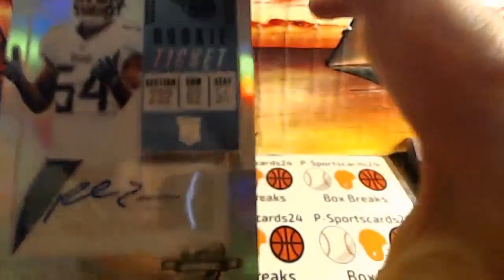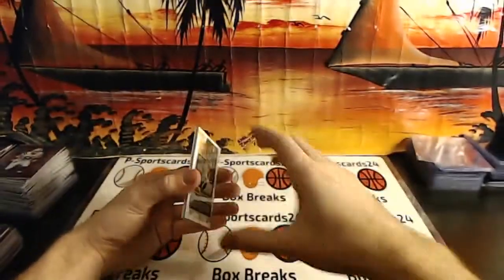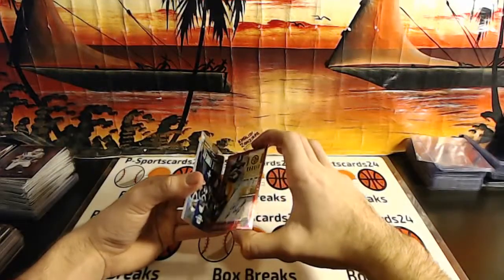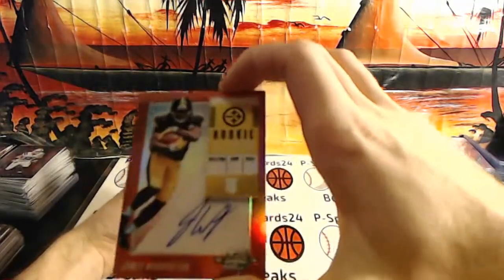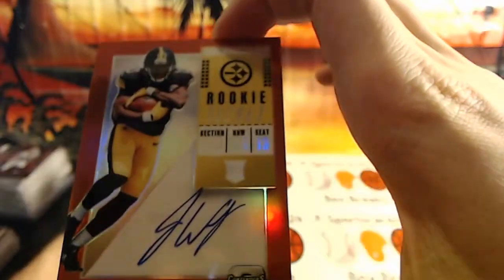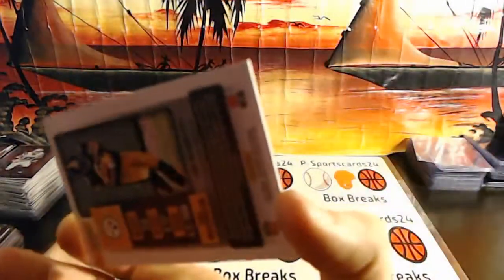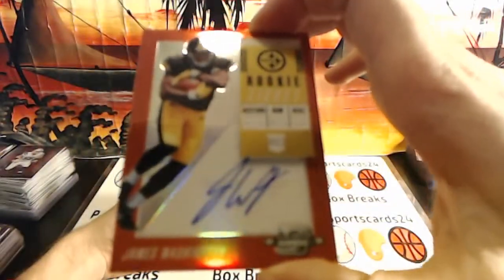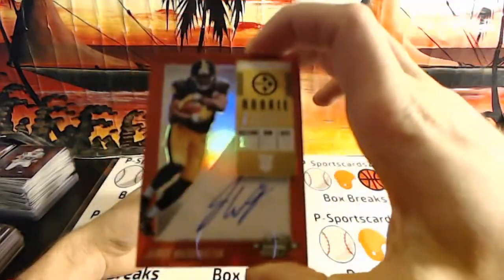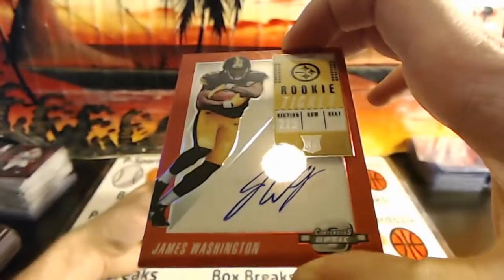Rashawn Evans auto. Rashawn for the Tennessee Titans, Rashawn Evans. Nice. James Washington on-card red out of 199, and a 199 James Washington. Nice.